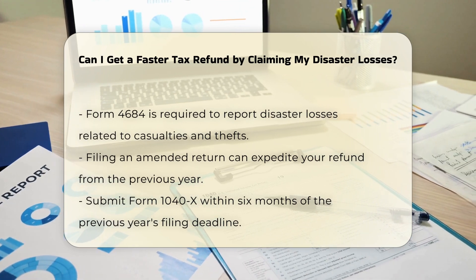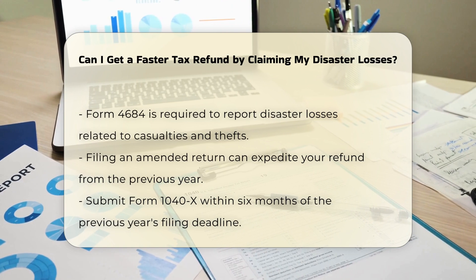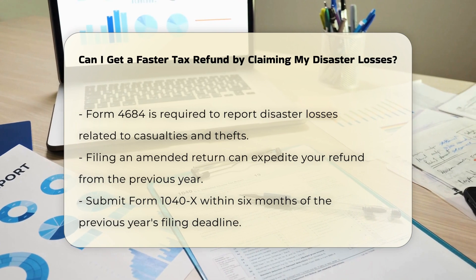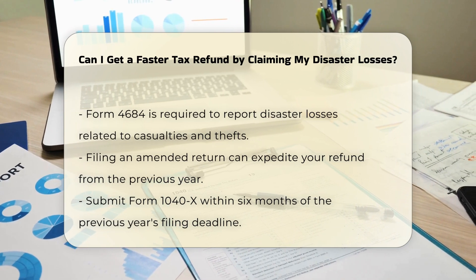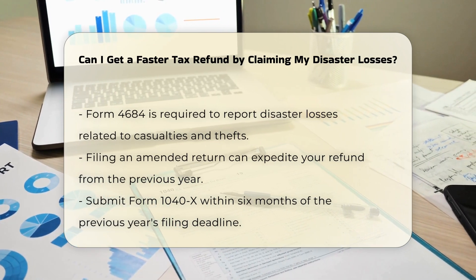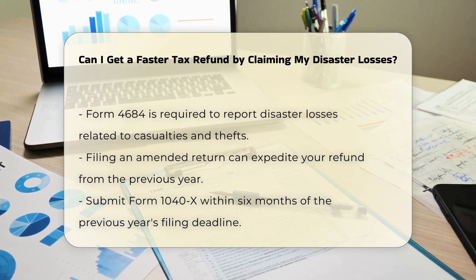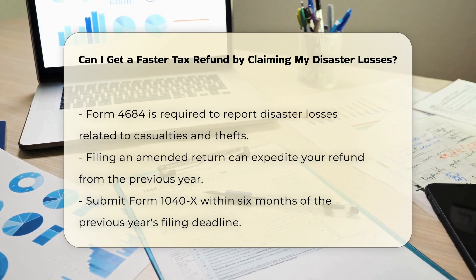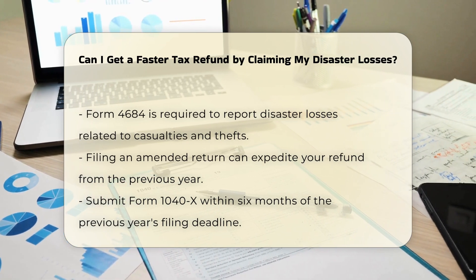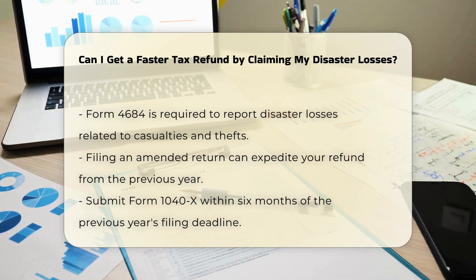Using Form 4684. To report your disaster losses, you need to use Form 4684, which is for casualties and thefts. This form must be attached to your tax return when you file.